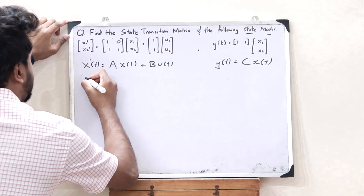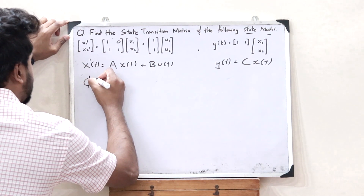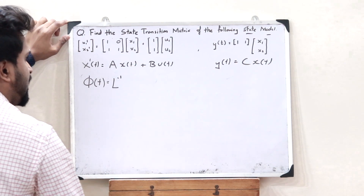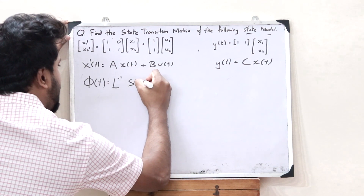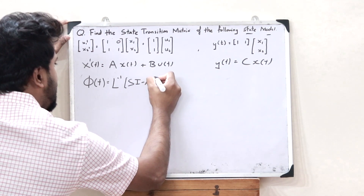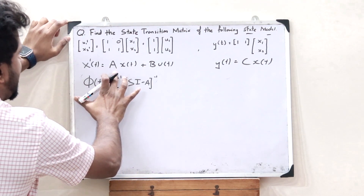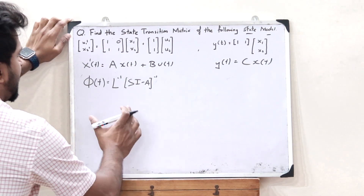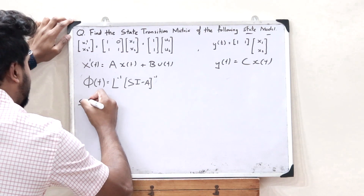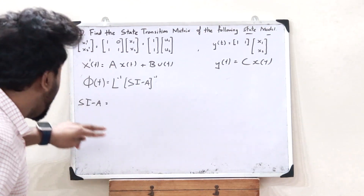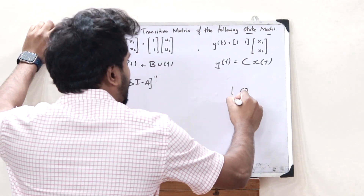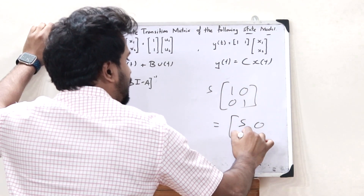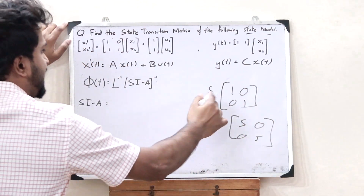In the previous video we derived that the state transition matrix phi(t) is given as the inverse Laplace transform of (sI - A)^-1. Here A is nothing but the matrix [1 0; 1 1]. So let us compute sI - A. Here I is the identity matrix [1 0; 0 1], so s·I is [s 0; 0 s].